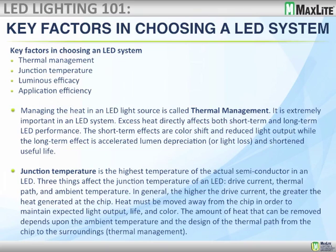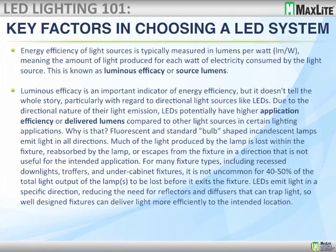The amount of heat that can be removed depends on the ambient temperature and the design of the thermal path. With a well-designed, third-party-verified fixture, you get good value for what you pay. Energy efficiency of light sources is measured in lumens per watt — the amount of light produced per watt consumed — known as efficacy or source lumens. Luminous efficacy is an important indicator, but it doesn't tell the whole story, particularly for directional light sources like LEDs. Due to their directional nature, LEDs potentially have a higher application efficiency — more delivered lumens — compared to other light sources.